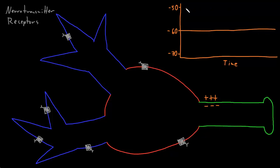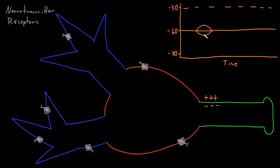Neurons have a threshold potential that's often around negative 50 millivolts, so that if the membrane potential at the trigger zone passes the threshold potential, an action potential may be fired down the axon. With inputs, the resting potential of neurons may be moved by small, brief potential changes called graded potentials that may move the membrane potential closer to zero — a depolarization or excitatory potential — or away from zero and farther from threshold, which is a hyperpolarization or inhibitory potential.